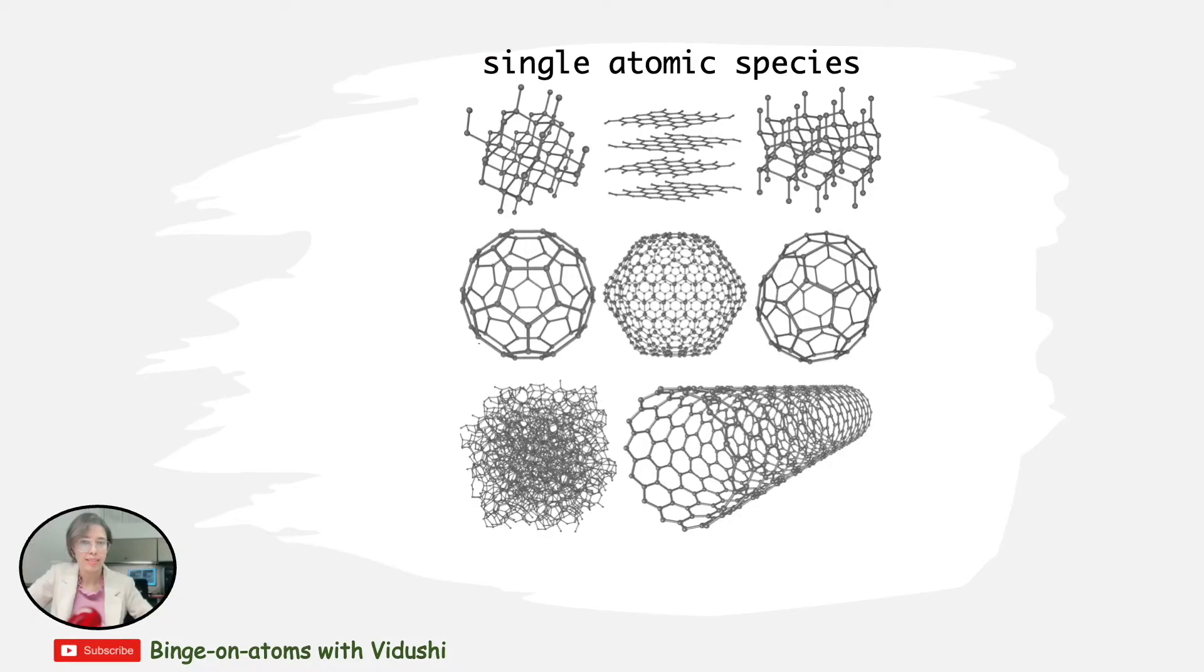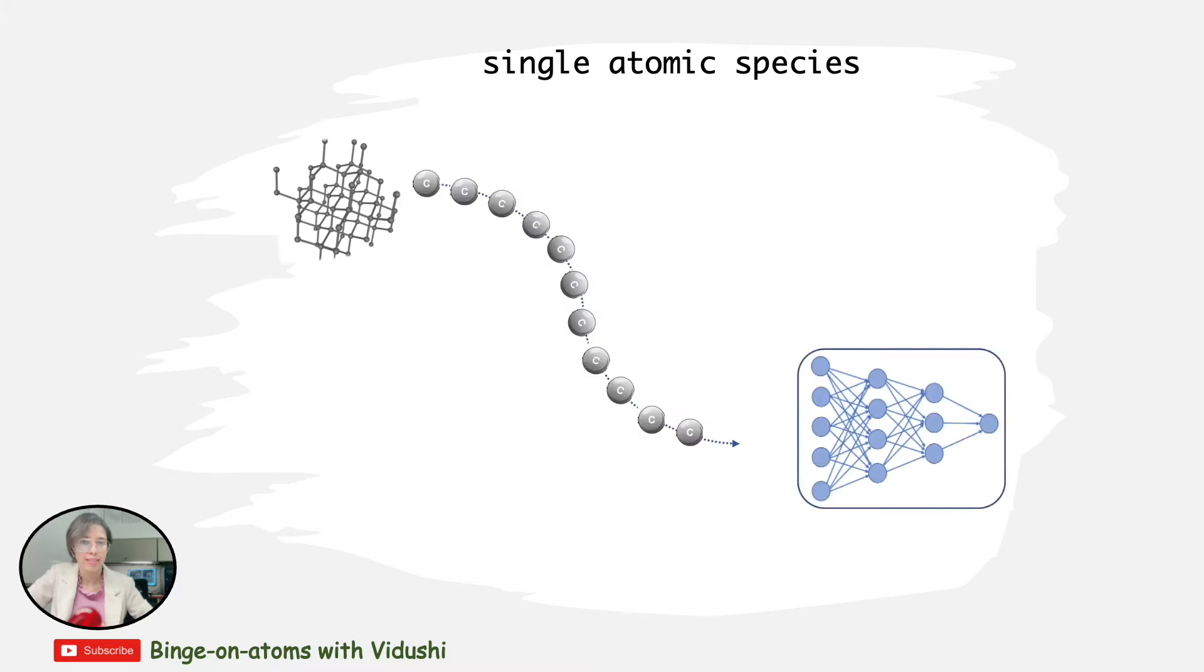Developing a deep neural network algorithm and training procedures are quite easy when your problem statement is all about single species systems. You don't have to worry about differentiating atomic species. All the atoms introduced to the neural network are the same.